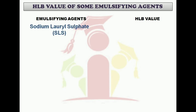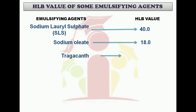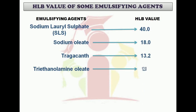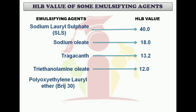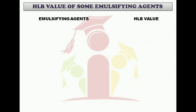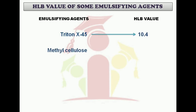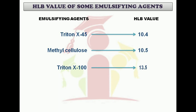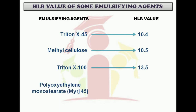Polysorbate 80 or Tween 80 has the HLB value of 15. Sodium lauryl sulfate, SLS — here comes the exception — with an HLB value of 40. Sodium oleate has an HLB value of 18. Tragacanth has an HLB value of 13.2, and gum tragacanth has an HLB value of 12. Polyoxyethylene lauryl ether or Brij 30 has a value of 9.7. Gelatin has a value of 9.8. Triton X-45 has an HLB value of 10.4. Methyl cellulose has a value of 10.5. Triton X-100 has an HLB value of 13.5. Polyoxyethylene monostearate or Myrj 45 has the HLB value of 11.1.